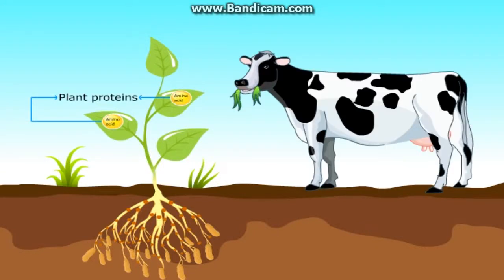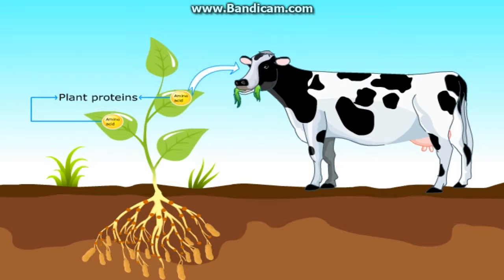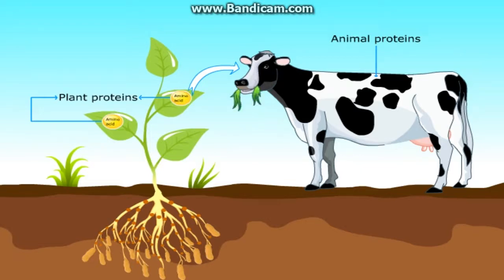These proteins and other complex compounds are subsequently consumed by animals to make their proteins. Thus, we can say that nitrogen is present in the protoplasm of plants and animals.